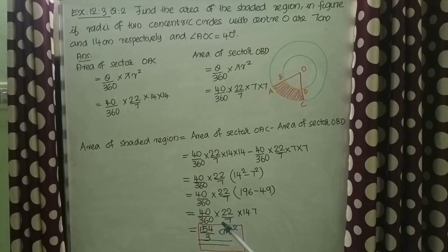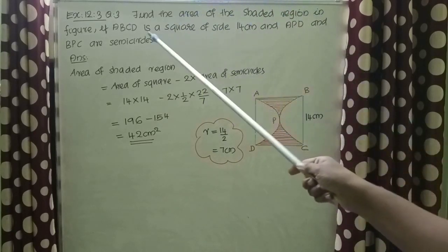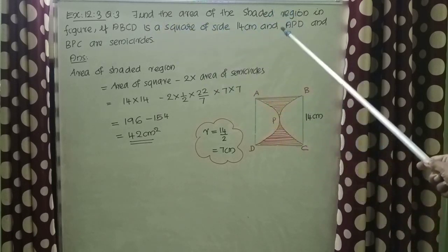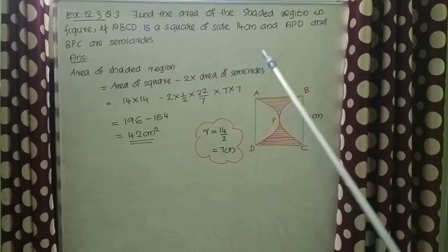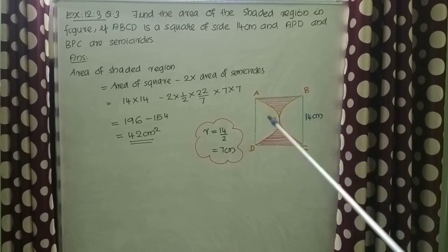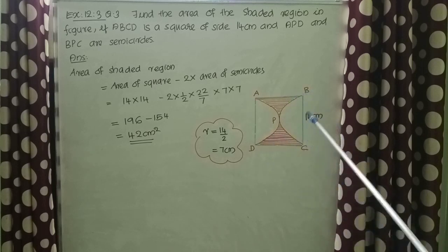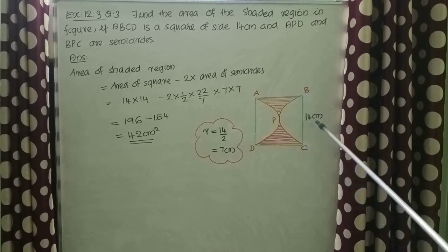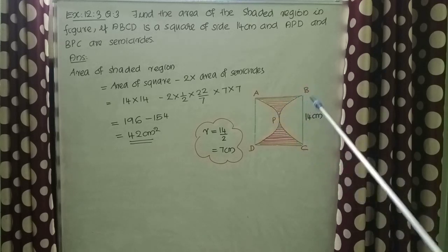Find the area of the shaded region in the figure if ABCD is a square of side 14 cm and APD and BPC are semicircles. Here is the figure: ABCD is a square, APD and BPC are semicircles. The square has side 14 cm, so 14 cm is also the diameter of each semicircle.